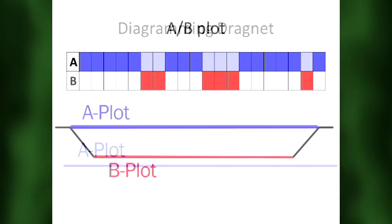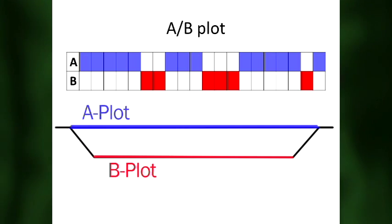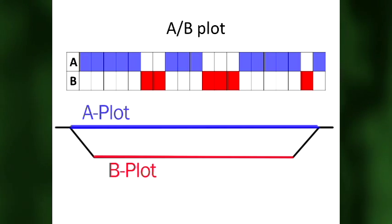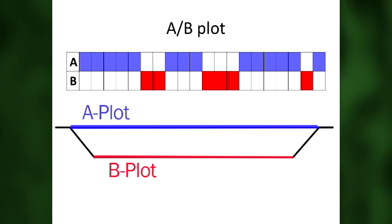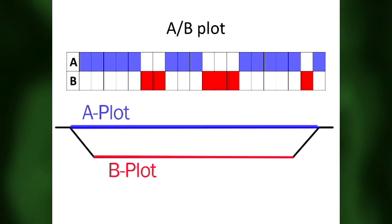Eventually writers discover the B-plot — a second story cross-cut with the main A-plot. In early television the two threads are mostly disconnected, involving different stories and different characters functioning independently. It's like two different episodes spliced together but not really connected. Still, no flashbacks, no non-linearities, no realities within realities — simple stories about simple humans.